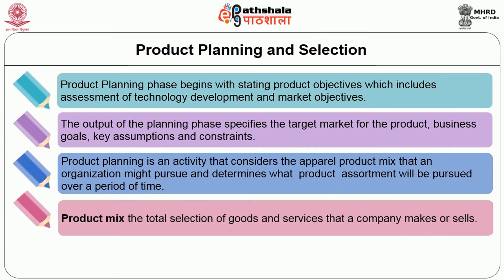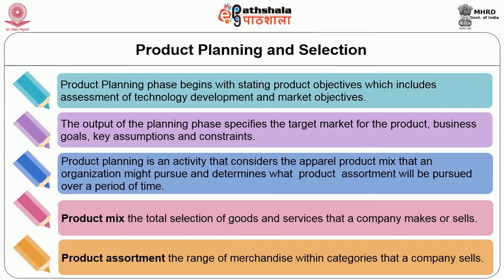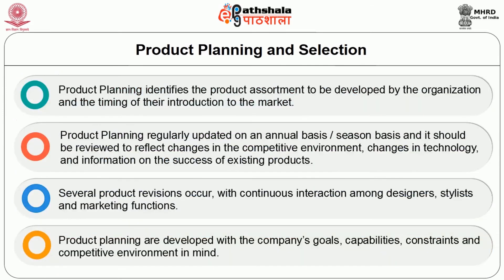Product mix is the total selection of goods and services that a company makes or sells. Product assortment refers to the range of merchandise within categories the company sells. Product planning identifies the product assortment to be developed by the organization and the timing of their introduction to the market. Product planning is regularly updated on an annual or seasonal basis and should be reviewed to reflect changes in the competitive environment, changes in technology, and information on the success of existing products. Several product revisions occur with continuous interaction among designers, stylists, and marketing functions. Product planning is developed with the company's goals, capabilities, constraints, and competitive environment in mind.